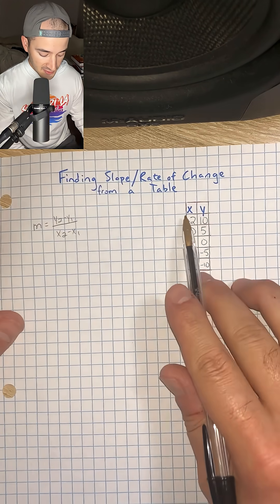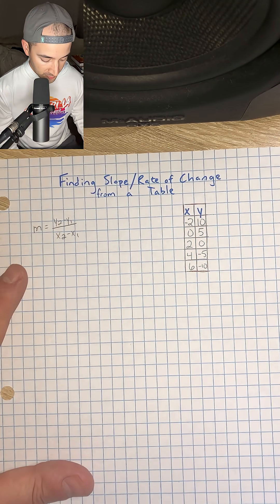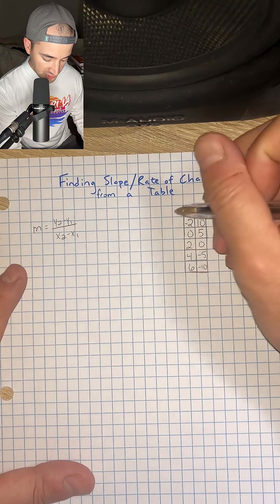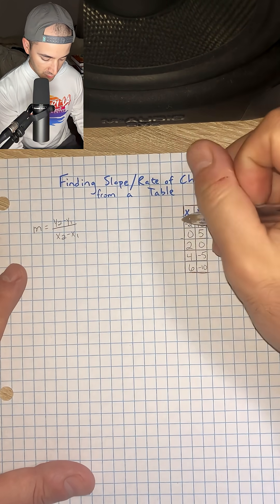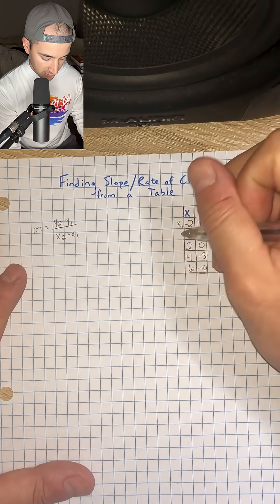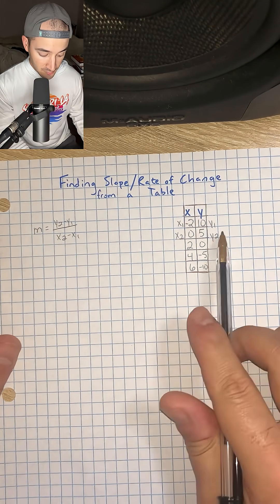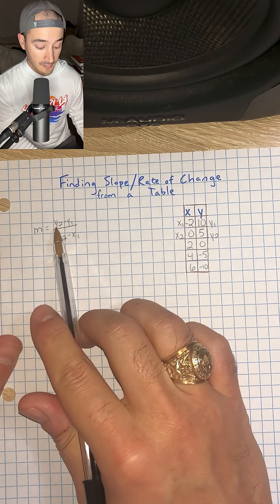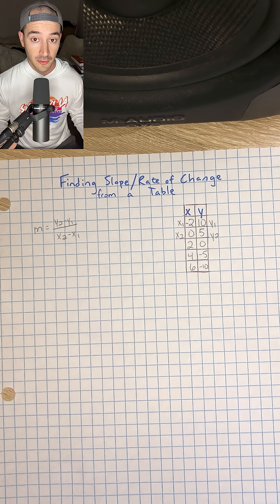We're going to pick two sets of points, and it doesn't matter which two. I'm just going to use the top two sets just to make it simple. And so this is going to be my x1 and my y1, and then my x2 and my y2. So I'm just going to go ahead and label them and plug them in just like they are. That way it's really simple and straightforward what we have to do.